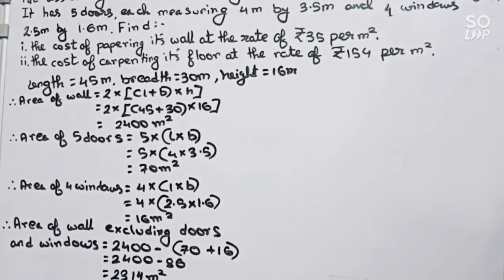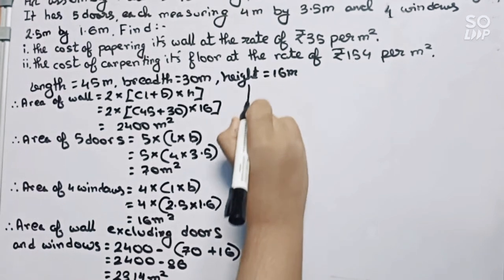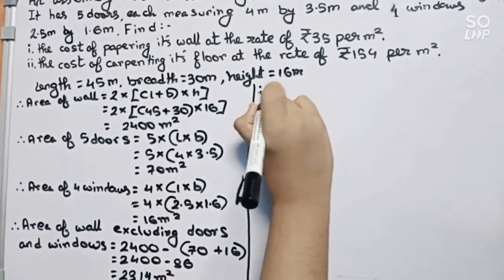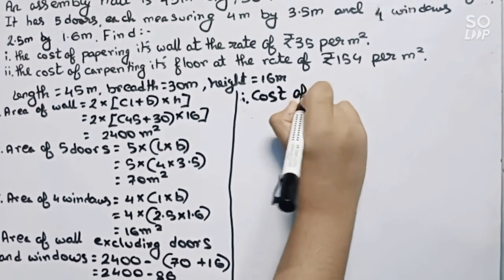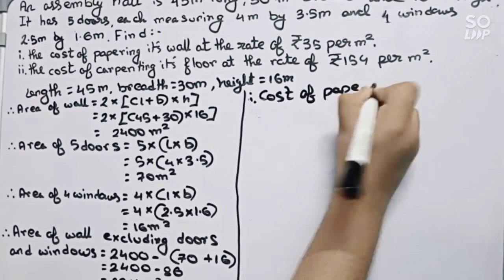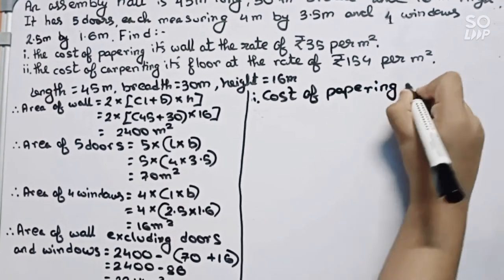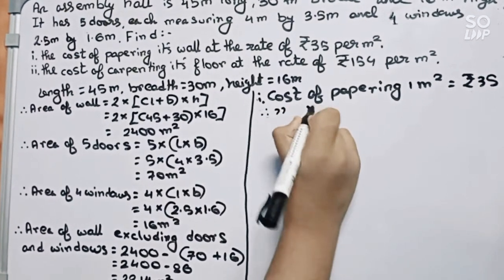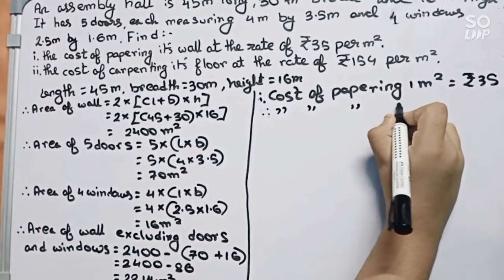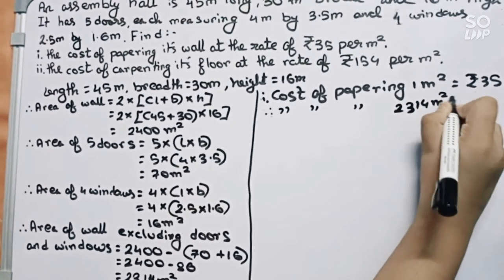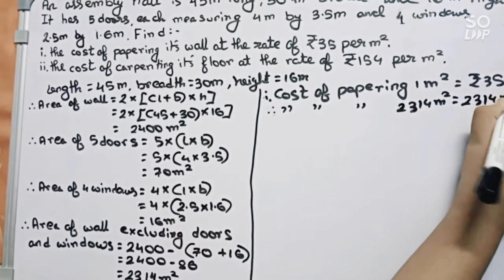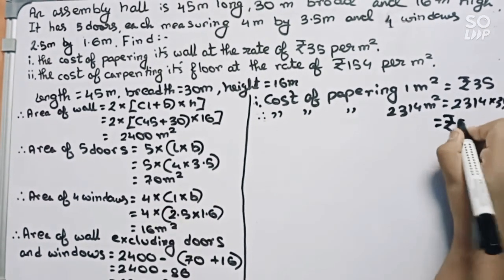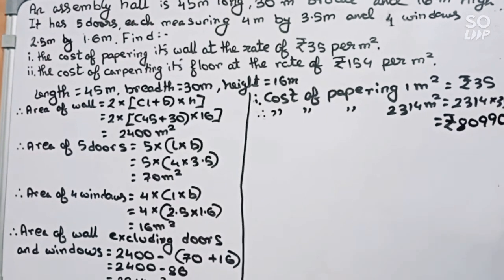Now I have to find the cost of papering. For 1 meter square it is given Rs 35. Therefore, cost of papering 2314 meter square will become 2314 into 35, which equals Rs 80,990. So this is our first solution.